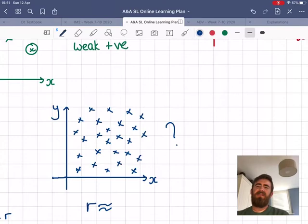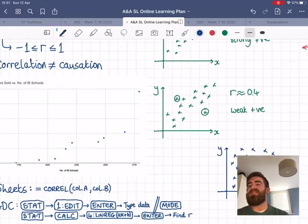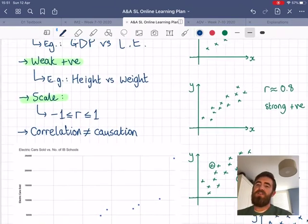Now what do we have here? We have no pattern, no relationship, and this would be a coefficient around 0. It might be 0.1, it might be negative 0.2, but we just say there's no correlation there.